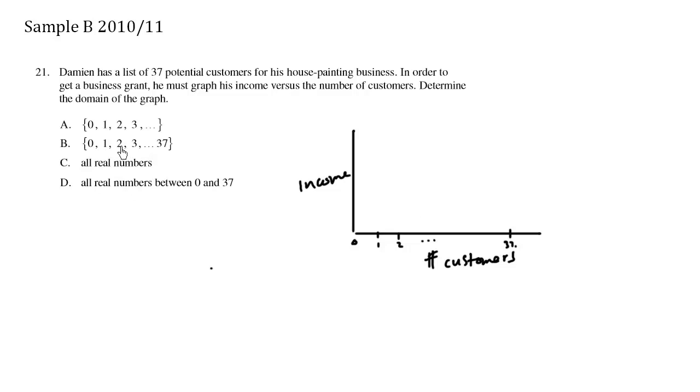There's no such thing as half a customer, so the answer here is B. The reason why we choose B over A is because we know that there is only a maximum of 37 customers. Potential customers is 37, that's the list.